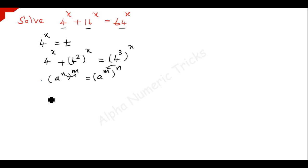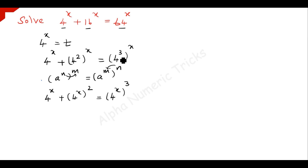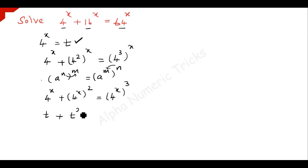Using this, you can write the equation as 4 to the power x plus (4 to the power x) squared equals (4 to the power x) cubed, where we are interchanging the two exponent terms. Now make use of the substitution 4 to the power x equals t, so the problem becomes t plus t squared equals t cubed.